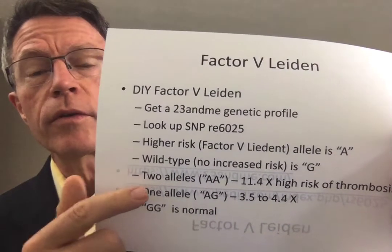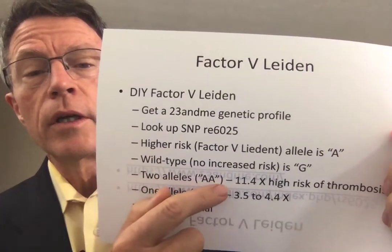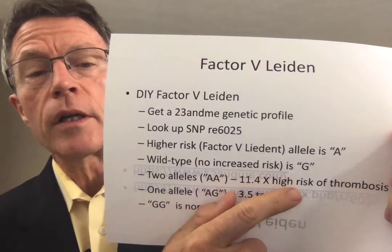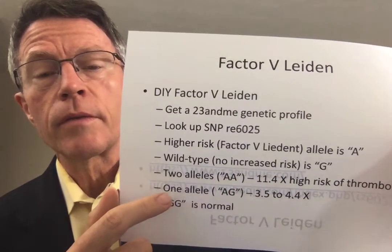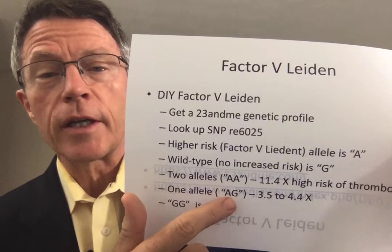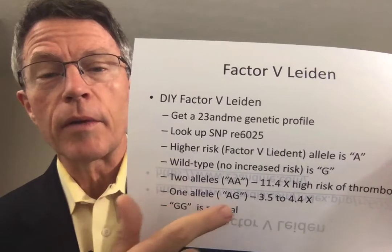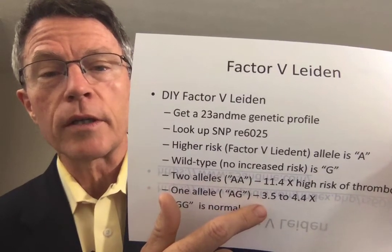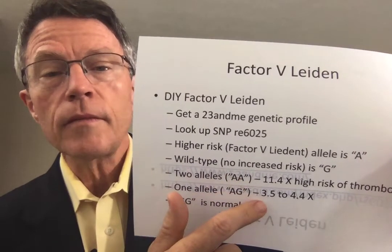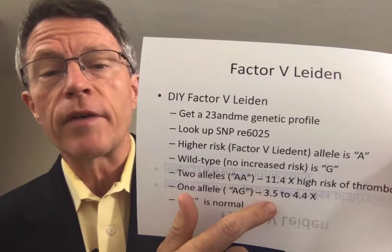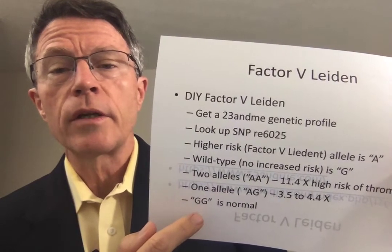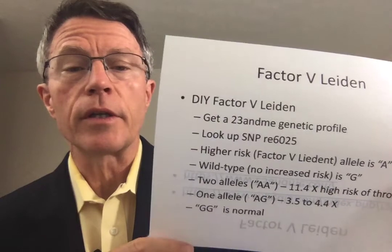The wild type, or no-increase-in-risk variant, is G. There are two alleles. If you have two high-risk alleles — homozygous for A — you've got up to 11 or 12 times higher risk of thrombosis. If you have one allele — in other words, an A and a G, with A from your mom and G from your dad or vice versa — that's heterozygous, and you have three to five times the risk. If you have two G's, meaning you're homozygous for the wild type, you have no increase in risk.